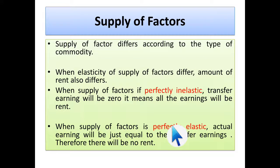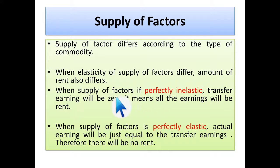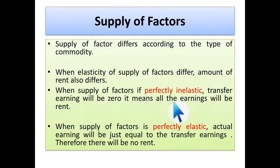Supply of the factor differs according to type. When the elasticity of supply differs, the amount of rent also differs. If the supply of the factor is perfectly inelastic, transfer earning will be zero — because any change in price will not affect the supply. Since transfer earning is zero, and economic rent equals actual earning minus transfer earning, economic rent will equal actual earning. When the supply is perfectly elastic, actual earning is considered as transfer earning, meaning whatever you are getting is just what is required to sustain in the business.